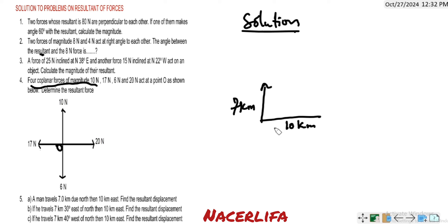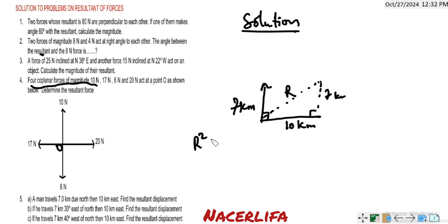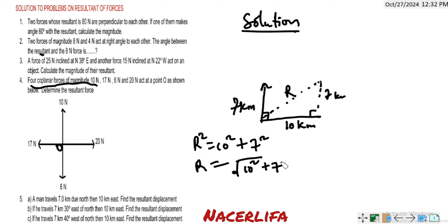Displacement is a vector — it is distance in a specified direction. We find the magnitude and give the direction. The angle between the two displacements is 90 degrees. Drawing the resultant line forms another triangle. Using Pythagoras: R² = 10² + 7², so R = √(10² + 7²) ≈ 12.21 kilometers.